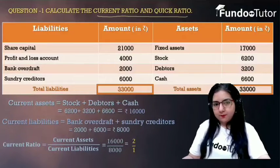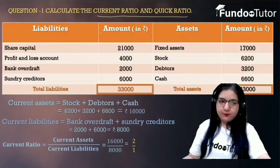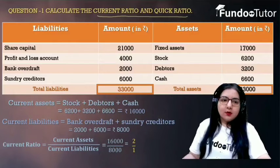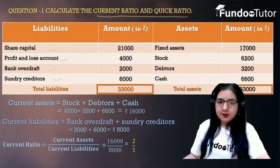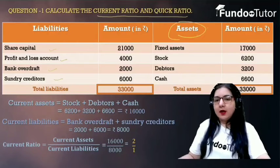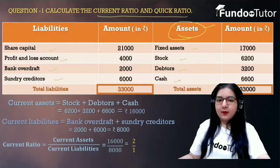The balance sheet is given to you. Under the liability side, we have share capital, profit and loss account, bank overdraft, and sundry creditors with their amounts. Under the assets side, we have fixed assets, stock, debtors, and cash with their amounts.